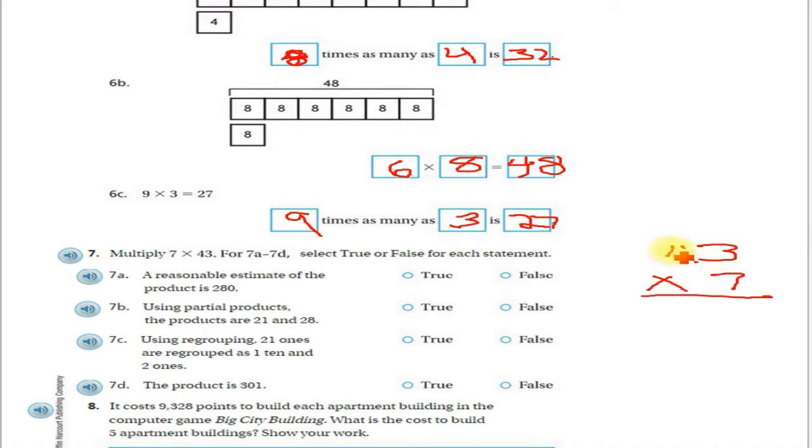I come over here, 43 times 7. Again, you can break this up into expanded form and do 40 and 3 and multiply those both by 7. I'm going to go ahead and regroup. 7 times 3 is 21. 7 times 4 is 28, plus the 2 more, that's 30, so 301. The first one says a reasonable estimate of the product is 280. Well, if we estimated this, remember estimating is kind of like rounding.